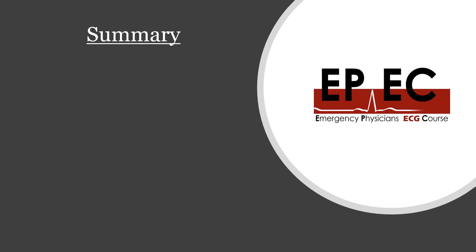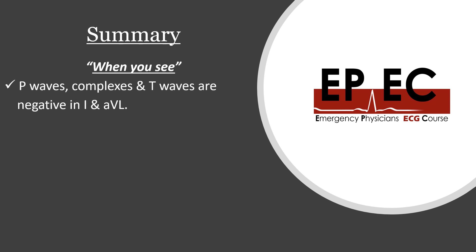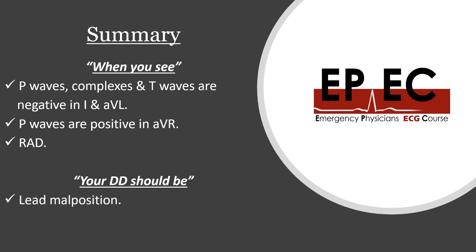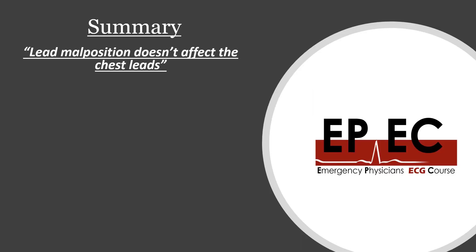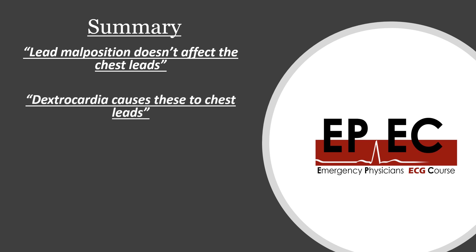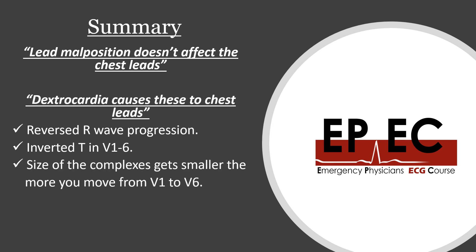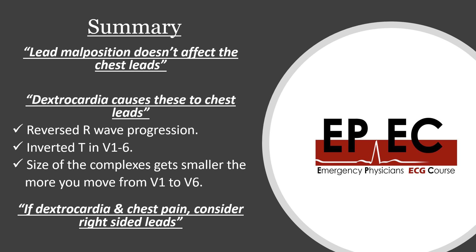In summary: when you see P waves, complexes, and T waves negative in lead I and AVL; P waves positive in AVR; and right axis deviation — think of two conditions: lead malposition and dextrocardia. Check the chest leads, because dextrocardia affects the chest leads while lead malposition does not. In dextrocardia, expect reversed R wave progression, inverted T waves from V1 to V6, and QRS complexes getting smaller from V1 to V6. If a dextrocardia patient presents with chest pain, consider right-sided leads.